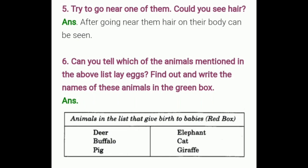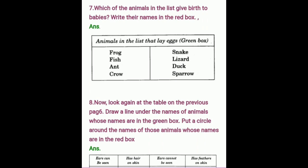Can you tell which of the animals mentioned in the above list lay eggs? Find out and write their names in the box. Animals that give birth to babies — deer, buffalo, pig, elephant, cat, giraffe — write these names in the red box. Animals in the list that lay eggs — frog, fish, ant, crow, snake, lizard, duck, sparrow — write these in the green box.